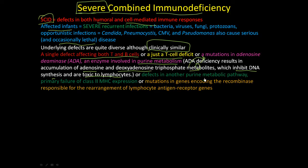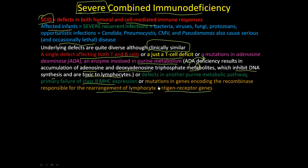Other causes include defects in purine metabolic pathways, primary failure of MHC class II expression — which inhibits T cells since antigen-presenting cells can't display antigens properly — and mutations in genes encoding the recombinase responsible for rearrangement of lymphocyte antigen receptor genes, preventing recognition of diverse microbial proteins.